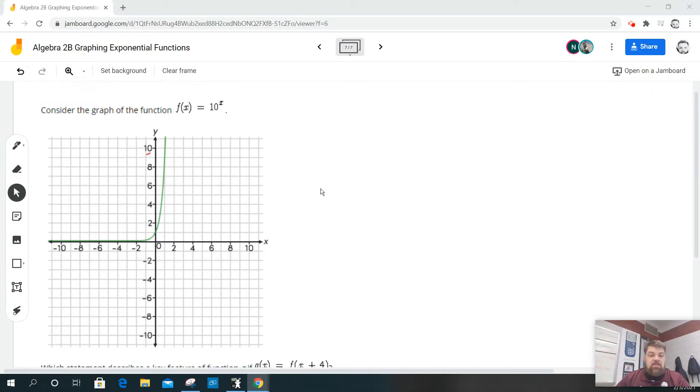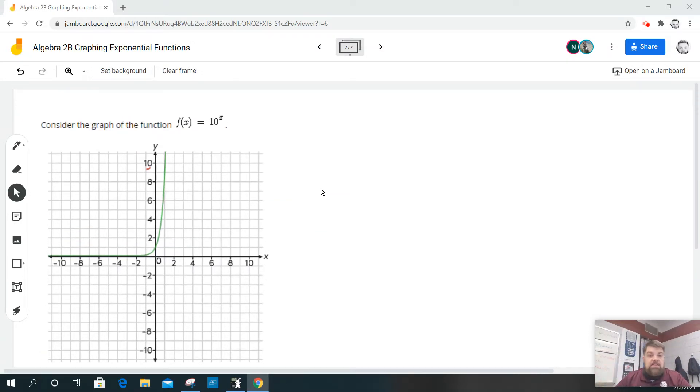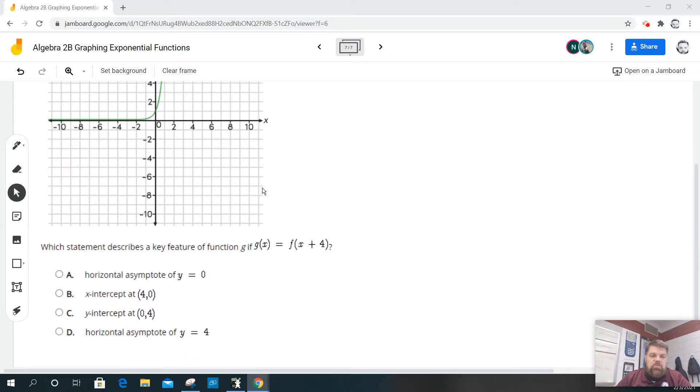So for this one, it says consider the graph of f(x) equals 10 raised to the x. And so here's the graph here. It says which statement describes a key feature of g(x), which is f(x+4).